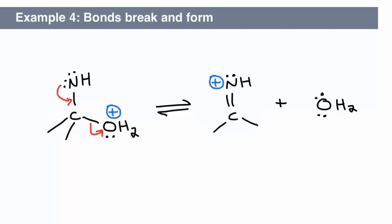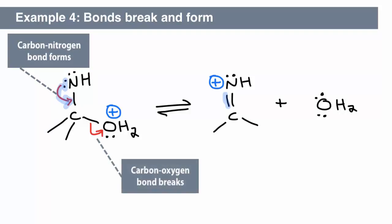In this fourth and final example, one bond forms and another bond breaks simultaneously. This is also called a concerted reaction. The left-hand arrow shows a new bond forming between the nitrogen and carbon atoms. The right-hand arrow shows the carbon-oxygen bond breaking, with the electrons moving to the oxygen atom.